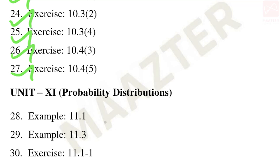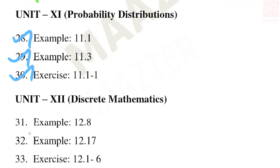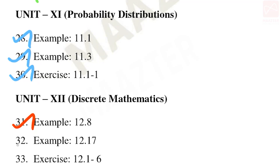Unit 11 Probability Distributions: example 11.1, example 11.3, and exercise 11.1 — first problem. Unit 12 Discrete Mathematics: a total of three sums — examples 12.8 and 12.17, and exercise 12.1 — sixth problem.